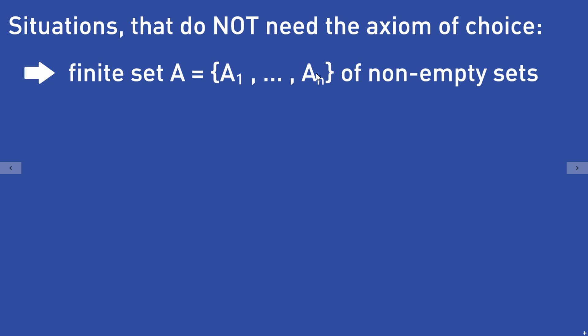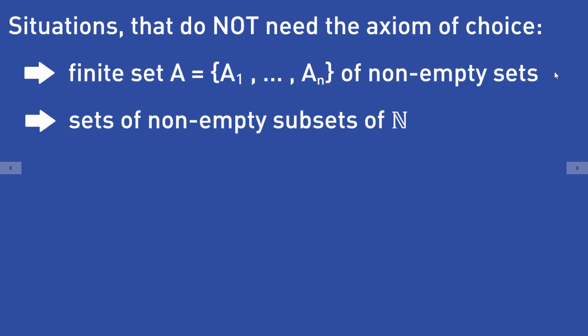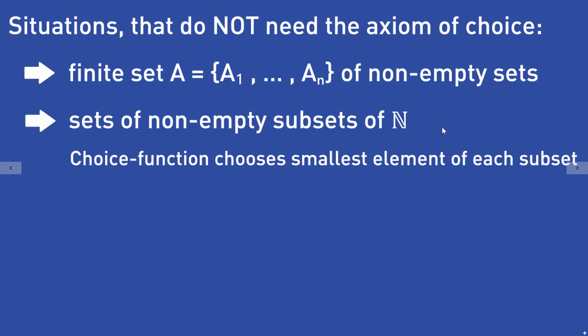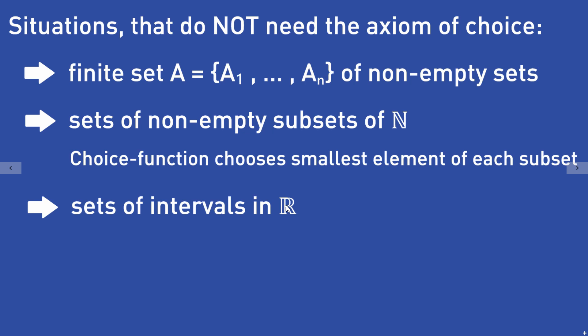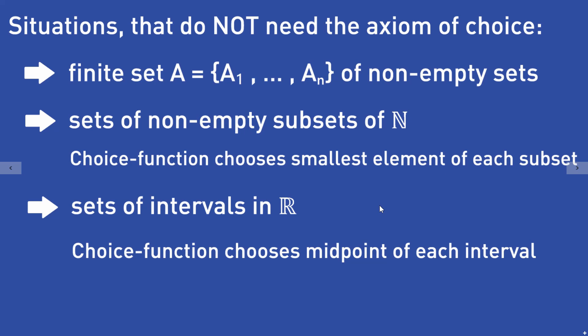If you want a proof, you can use induction to show the existence of a choice function. For sets of non-empty subsets of the natural numbers, it is also easy to give a choice function — it just picks the smallest element of each subset, so you don't need the axiom of choice. For sets of intervals in the real numbers, it is also possible to define a choice function that picks the midpoint of each interval. You don't need the axiom of choice in that case either.